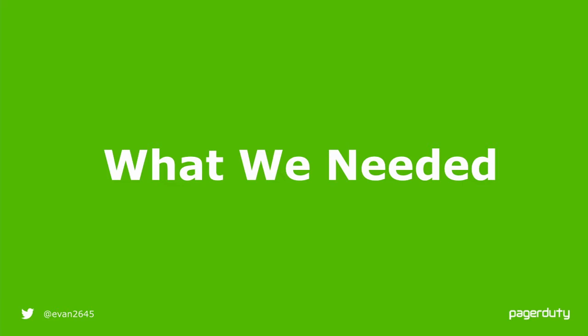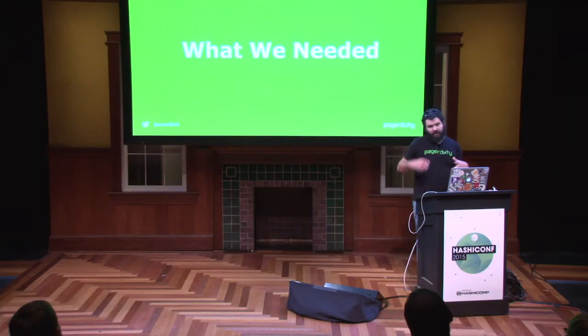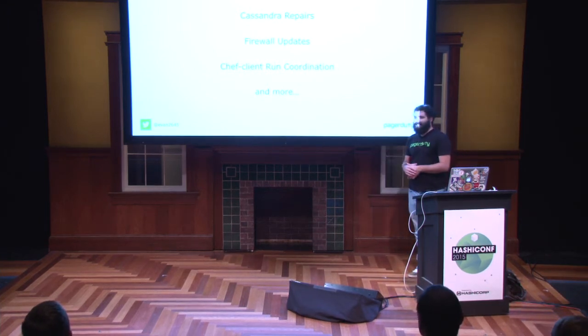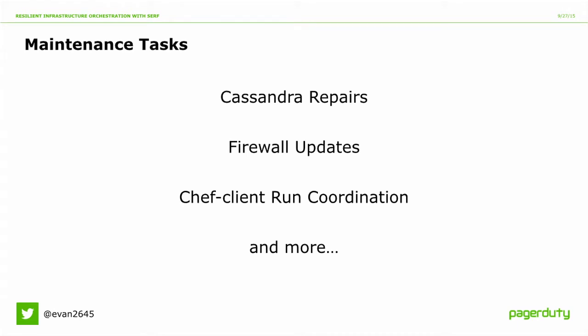What does PagerDuty need? What are the problems we're trying to solve? I've been here for a few years and seen us grow a lot — probably 10x in terms of people, infrastructure, requests, all the metrics. We've cropped up a lot of maintenance tasks that need to be done on our infrastructure. Every one of these tasks has to be coordinated in some way. Our Cassandra repairs have to be sequential. The firewall port configuration has to happen before the deploy but after the security tooling. And there's Chef run coordination across clusters that has to happen in order to make things work the way you want.